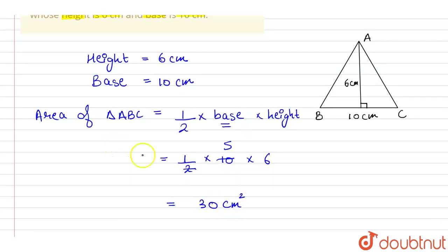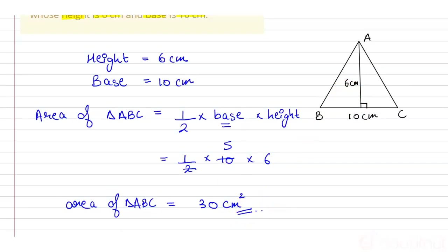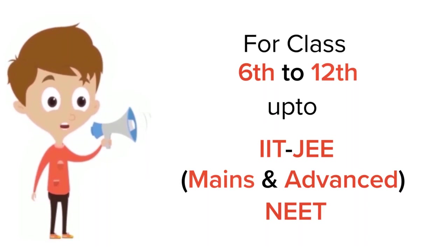The area is 30 centimeter square, because area is always calculated in square units. So the area of triangle ABC, whose base is 10 centimeters and height is 6 centimeters, is 30 centimeter square.